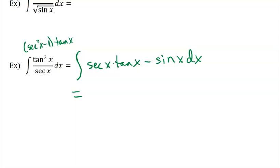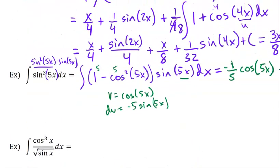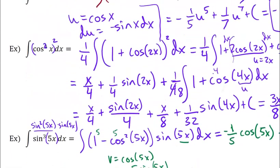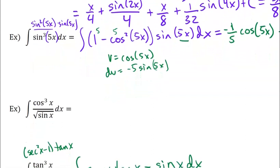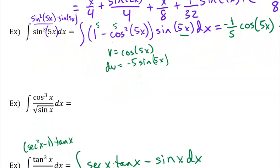Then this integral actually becomes pretty straightforward — I don't need to do any other substitutions. The integral of secant tangent is secant, and the integral of negative sine is a positive cosine, and then plus C. So hopefully you saw enough examples. I will complete the rest of them and make sure you get full notes with all the examples filled in.